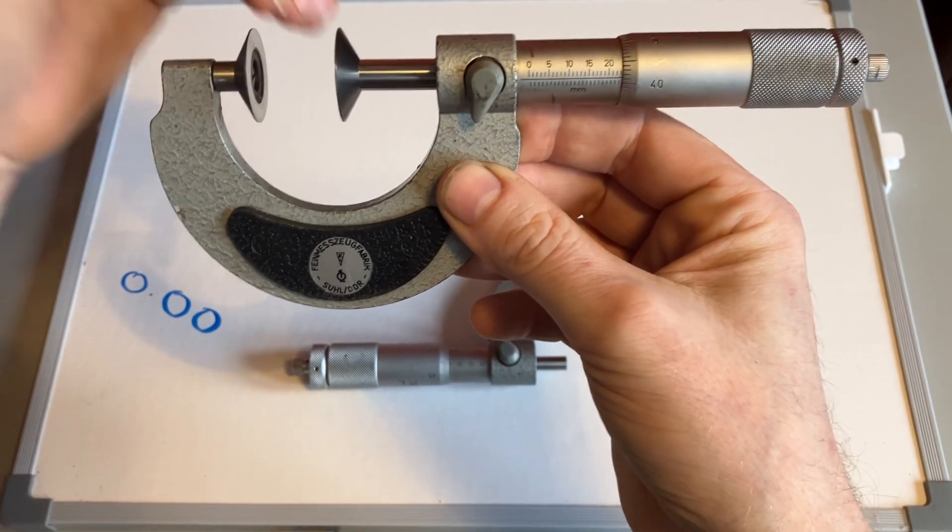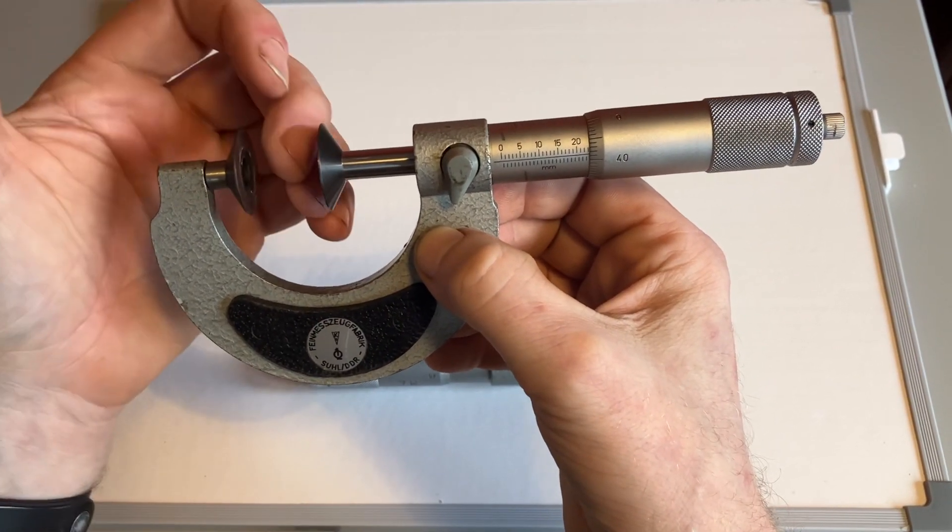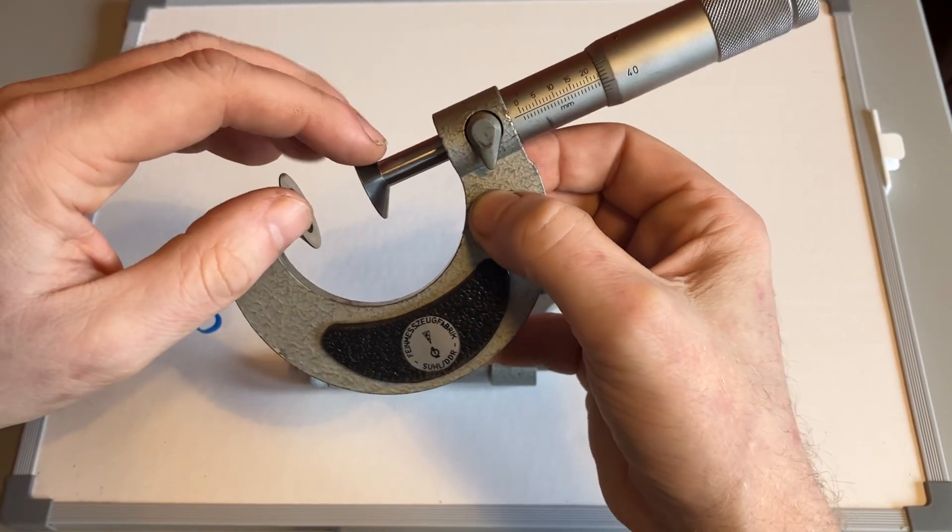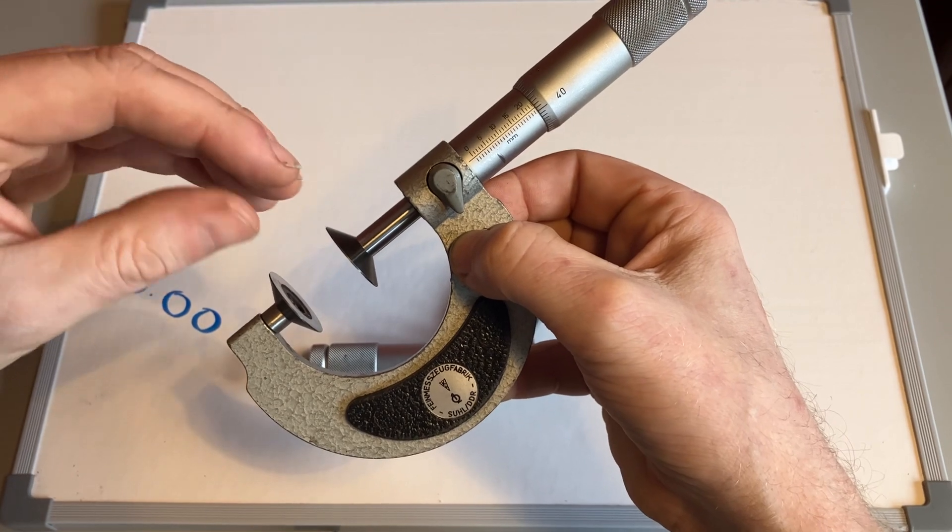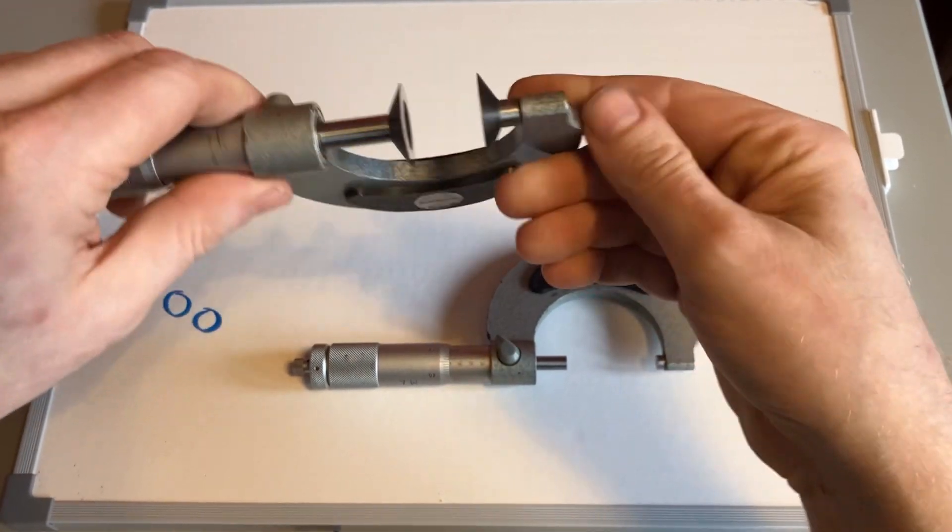What you would do is put your item that you want to test in here. For a mechanic it might be a brake disc or a brake pad, something like that. Then you clamp it together and it will measure the outside thickness. So if you've got a component that wears down and gets thinner over time, this is the tool that you might use to test for its thickness.